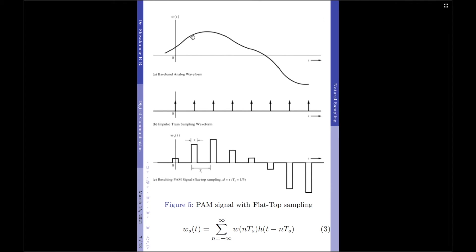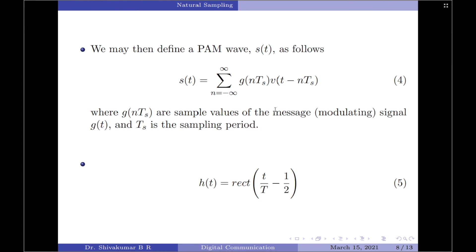That is about the generation of PAM signals using the three sampling techniques. Coming to the transmission bandwidth requirement, particularly with respect to flat top sampling, a very wide band of frequencies would be required. However, this need not be so if we formulate the pulses in terms of a standard pulse. We have an equation here: instead of representing H(t) indicating a rectangular pulse, we use a standard pulse represented by V(t − nT_s). By using this standard pulse in place of rectangular pulses, the overall transmission bandwidth requirement for PAM signals generated by flat top sampling can be significantly reduced.